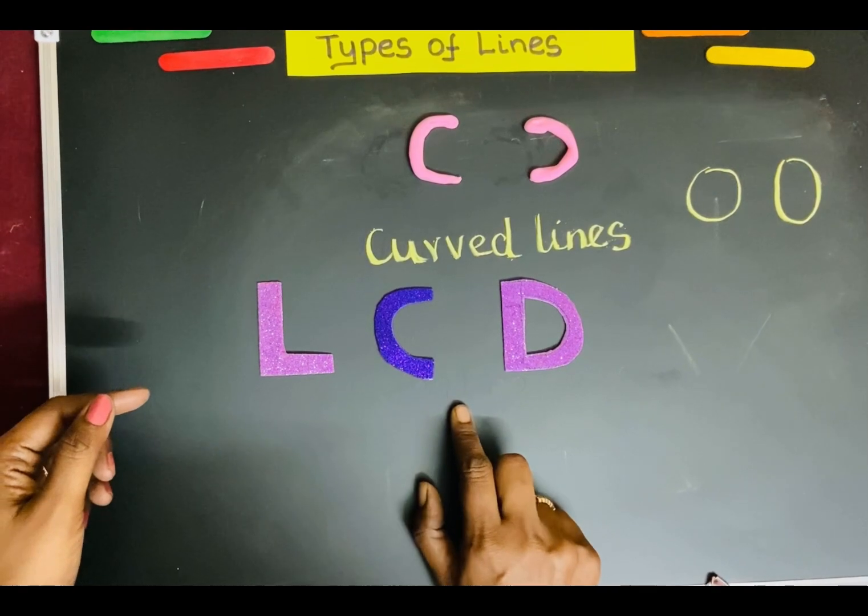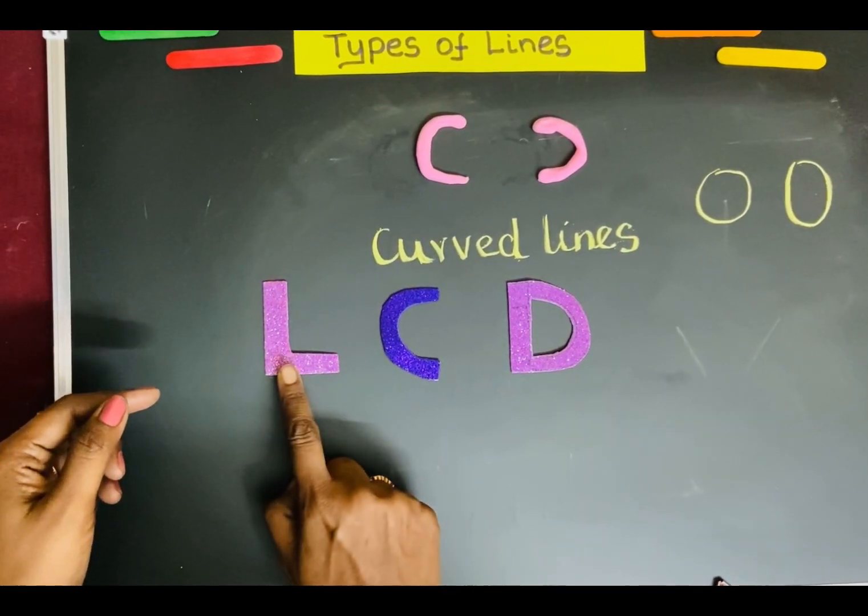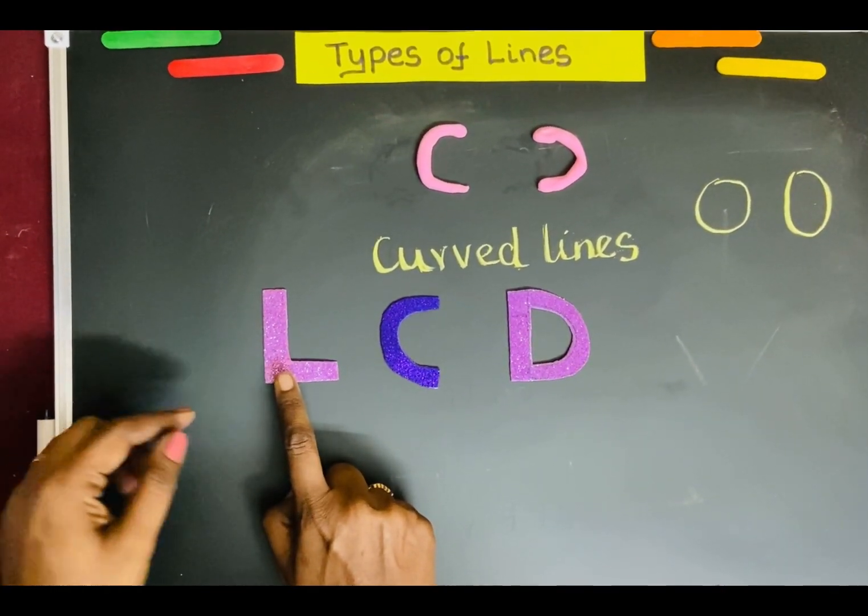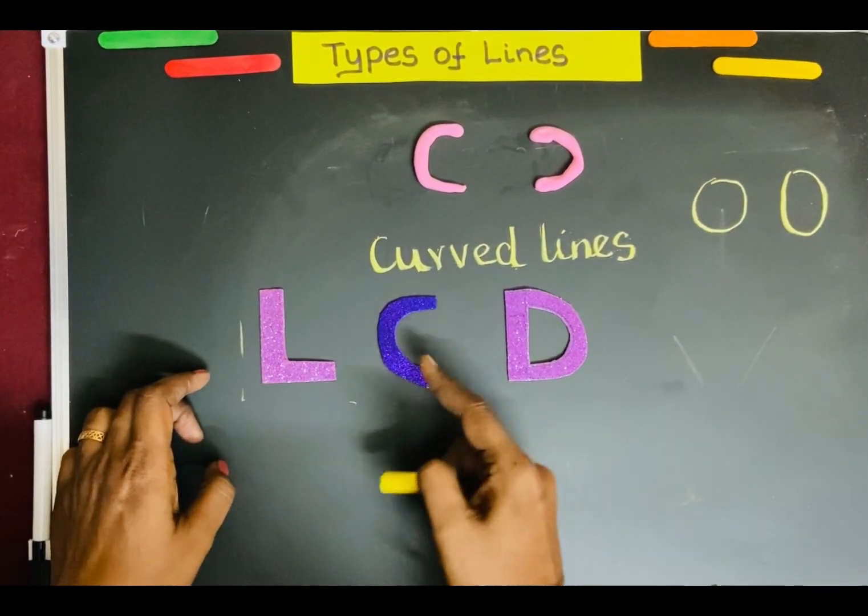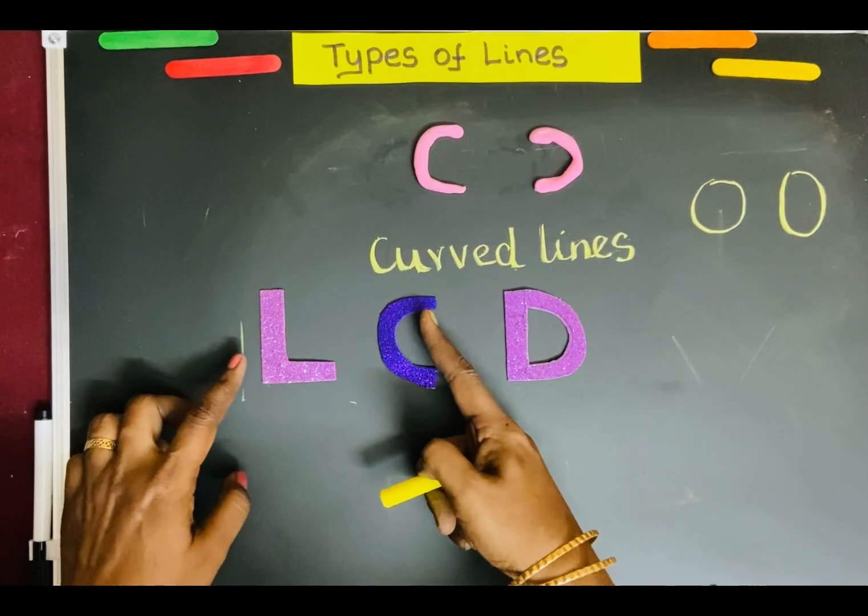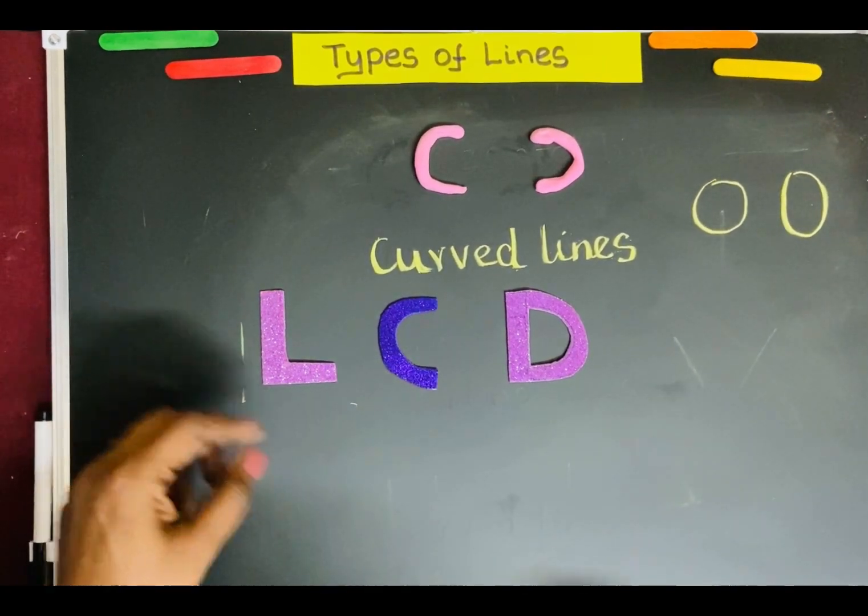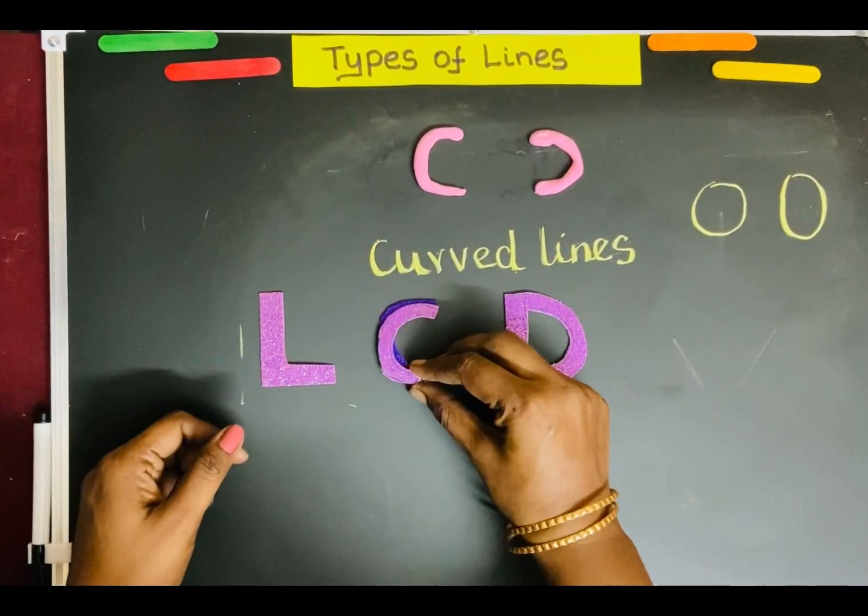See the capital letters. Look at the letter L. It is made by straight lines. Look at the letter C. It is made by curved lines.